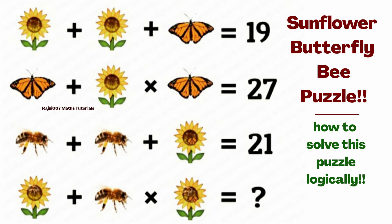Today's puzzle is again related to the picture puzzle. You can see three equations. We have to know the value of three equations. This puzzle is called Sunflower Butterfly Bee puzzle. How to solve this puzzle logically, I will tell you about it. Please try and comment on the video.